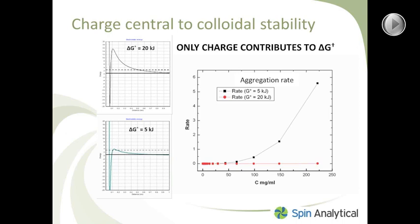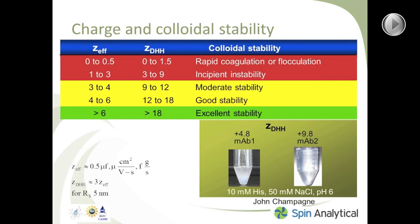Colloidal scientists have been working with charge on polymers for a long time and have come up with a set of rules of thumb, shown here in the table. If you have a Debye-Hückel-Henry charge — that's the second column, Z_DHH — and the charge is less than ten, you're begging for trouble: you're going to have rapid coagulation, flocculation, or incipient instability. If you have a charge between nine and twelve you have a moderately stable system, and if you have a charge greater than twelve you have good stability.